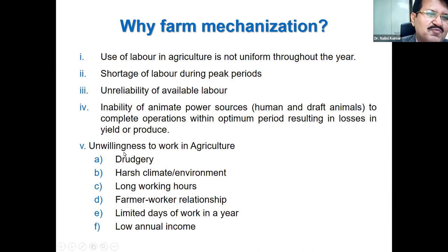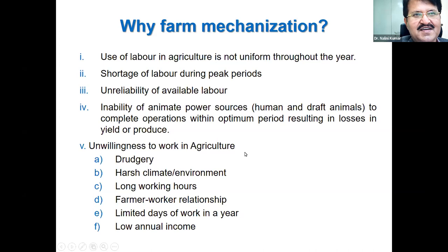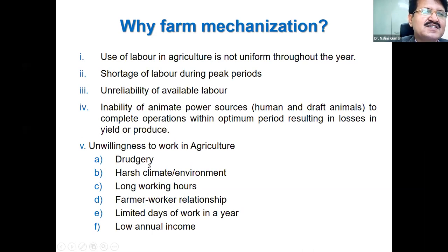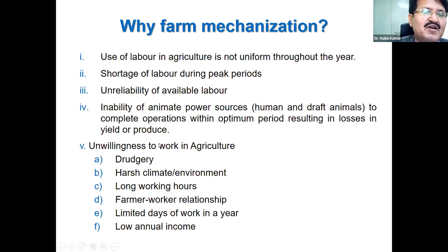A fifth and more alarming reason is unwillingness to work in agriculture. In spite of agriculture providing bread and butter to most people in this country, nobody wants to work in it. Most people want to shift from agriculture, mainly due to the drudgery involved in agricultural operations. Without farm machinery, a lot of drudgery is involved, so people do not like such kind of work and therefore don't want to do it.